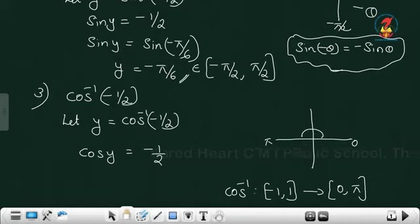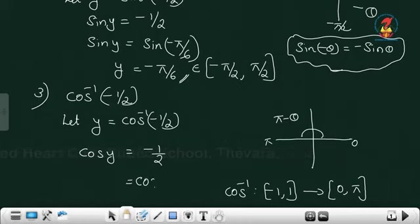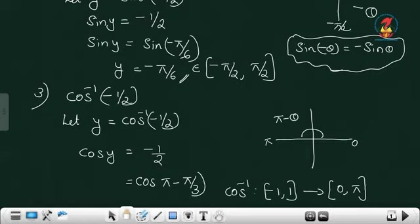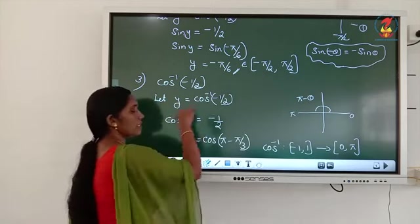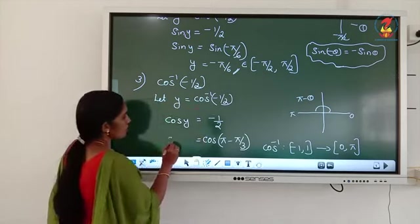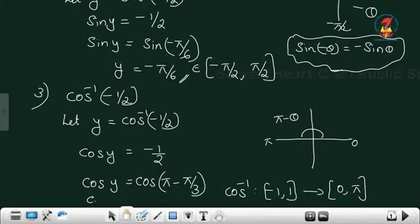Cos is negative in the second quadrant. Second quadrant value we can calculate as pi minus theta. So here we write cos of pi minus theta. Theta means 1 by 2 at which angle — cos 60. Sine 30 is 1 by 2 and cos 60 is 1 by 2. So pi minus pi by 3. Cos of pi minus theta is minus cos theta, so we get minus half. So y equals pi minus pi by 3, which simplifies to 2 pi by 3.